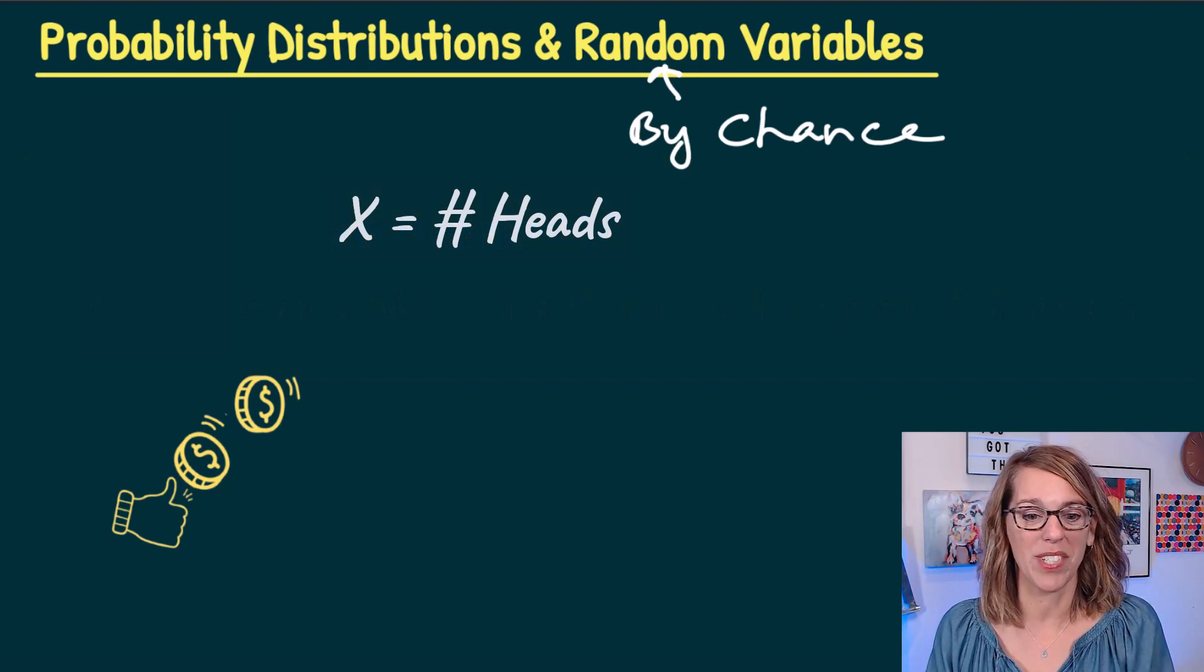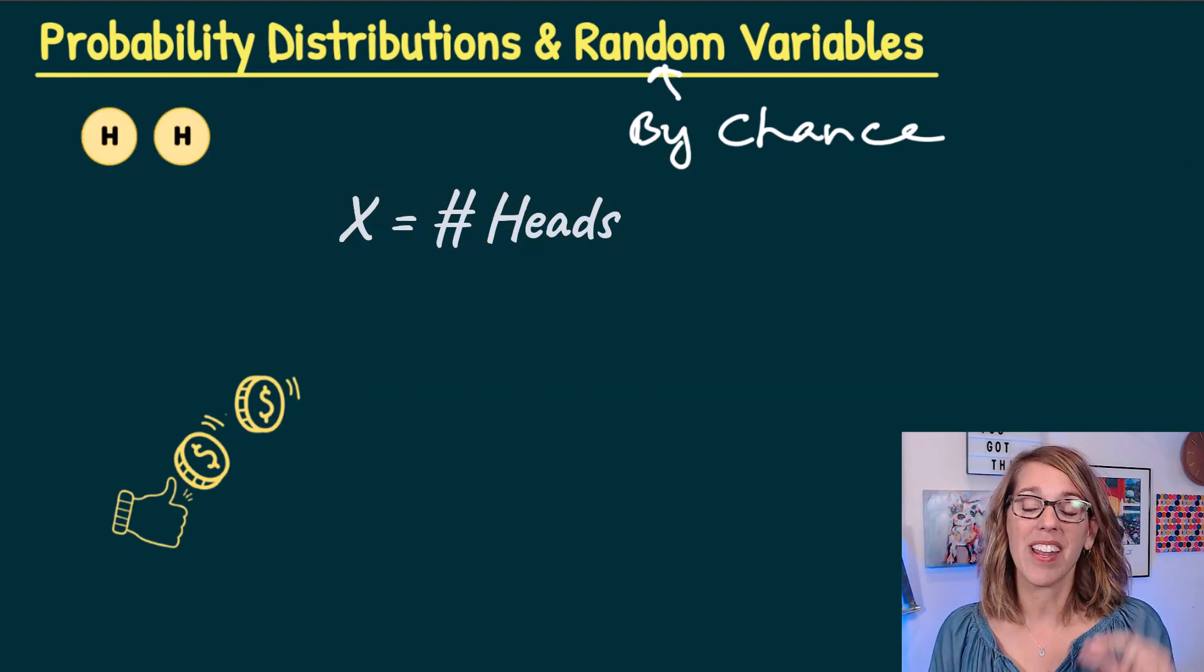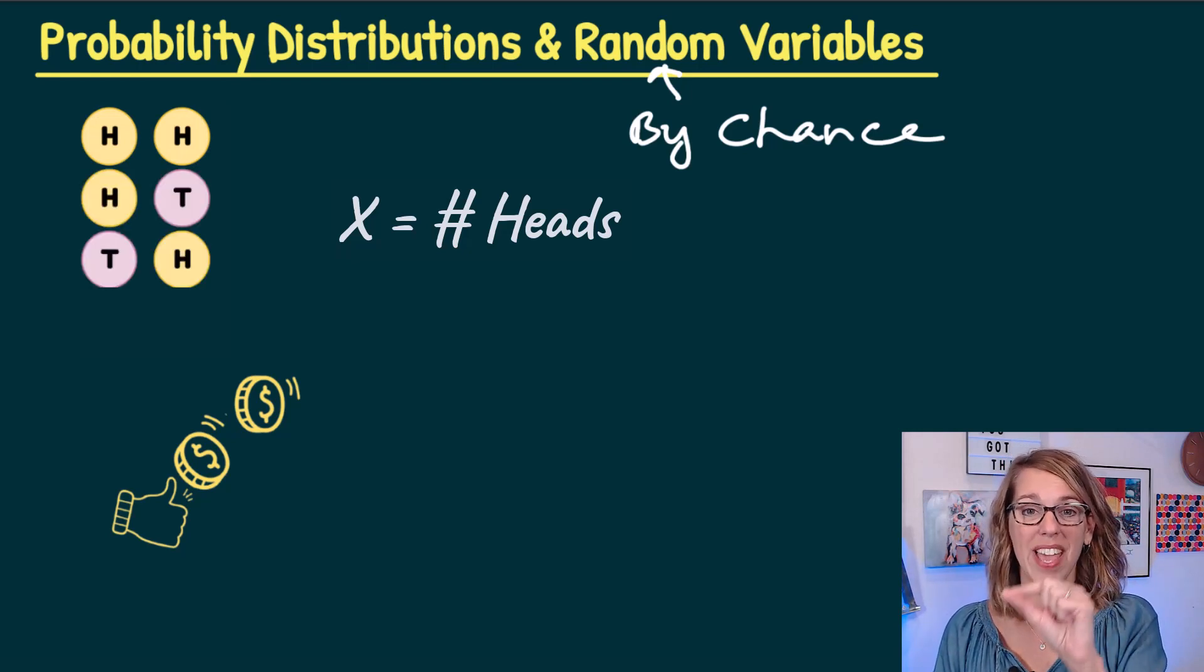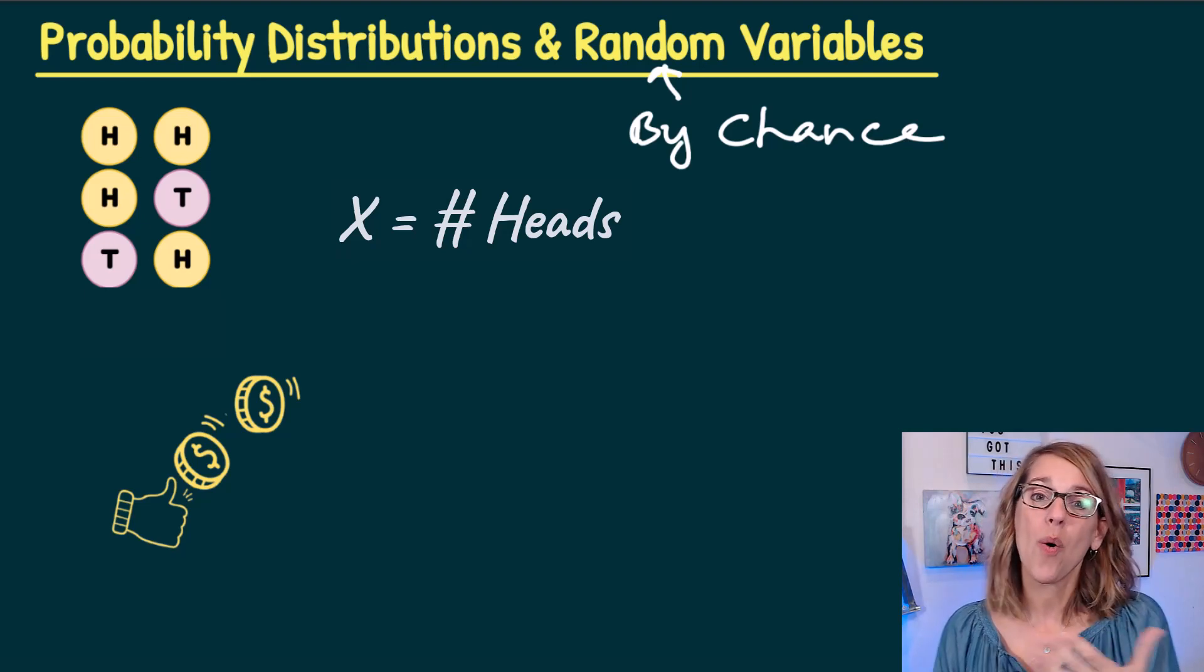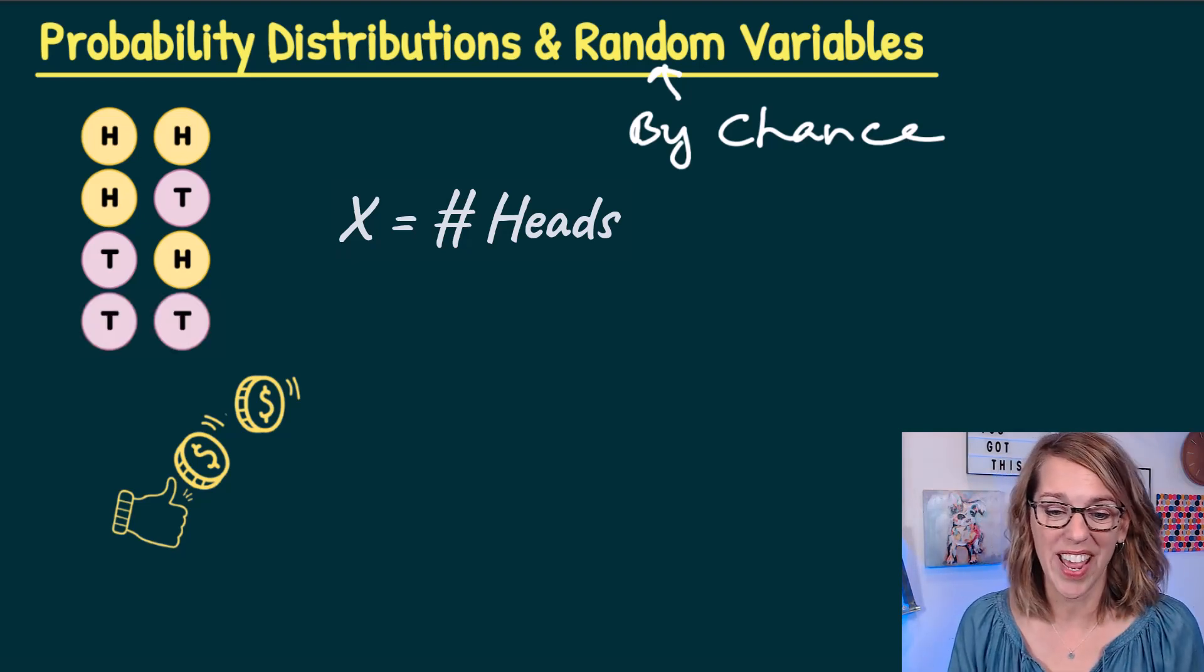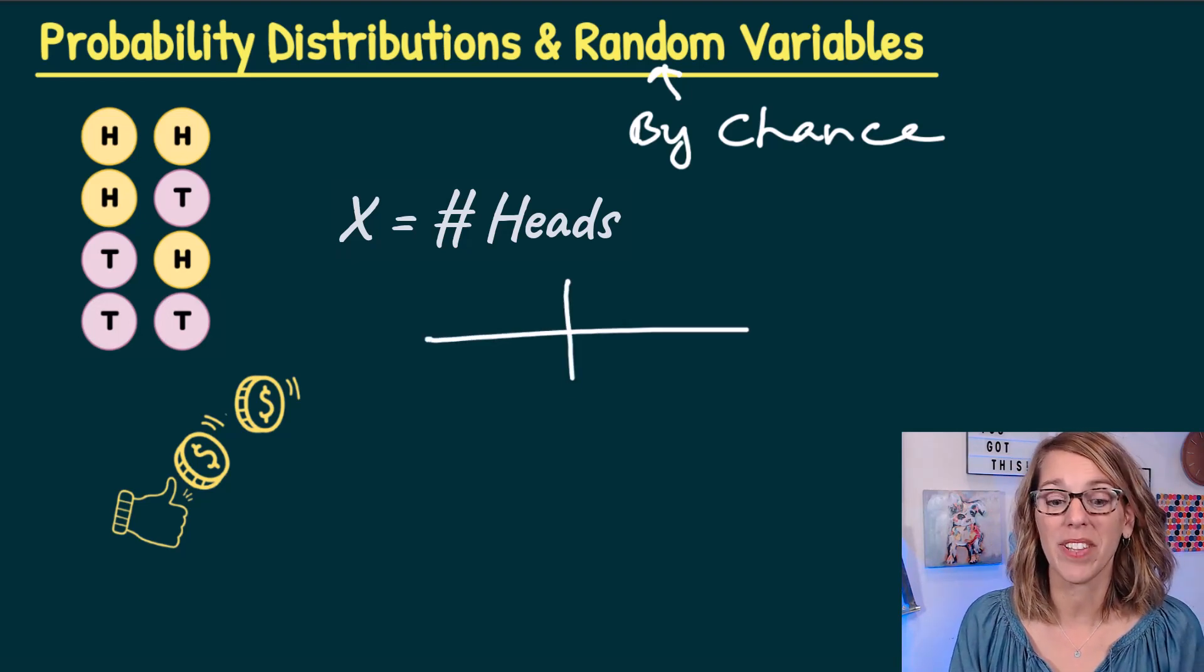So what are those outcomes? I could either get two heads, or I could get a single head, which would be a heads and a tail or a tails and a head. That one shows up twice. Or I could get two tails. This is going to build me right into my probability distribution.